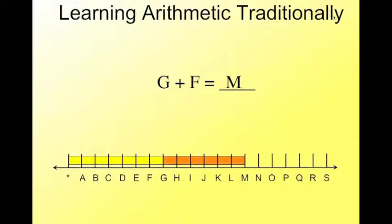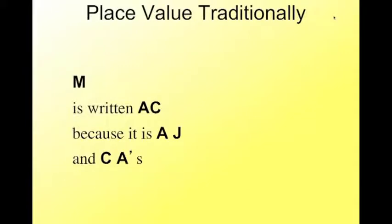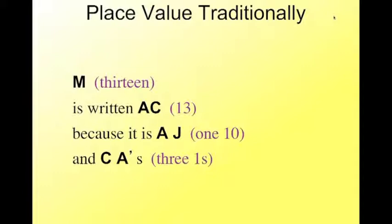This is what it looks like when you're learning arithmetic traditionally with the counting model. And then place value, M is written as AC because it's AJ and CAS. What? Well, M, 13, is written as AC, a 1 and a 3, because it's AJ, 1, 10, and CAS, 3, 1s. So if you don't understand place value and the way it works, this is what it looks like to the kids, which is a bit silly from this point of view, but this is what it looks like to somebody who doesn't understand place value.